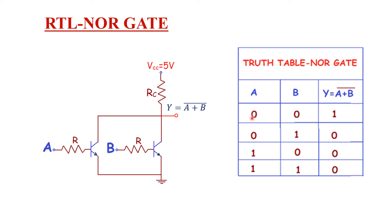Looking at the truth table: when both inputs A and B are 0, Y equals 1, because 0 plus 0 bar equals 1. When A is 0 and B is 1, then 0 plus 1 bar equals 0. When A is 1 and B is 0, again 1 plus 0 bar equals 0. And when A is 1 and B is 1, 1 plus 1 bar is also 0.